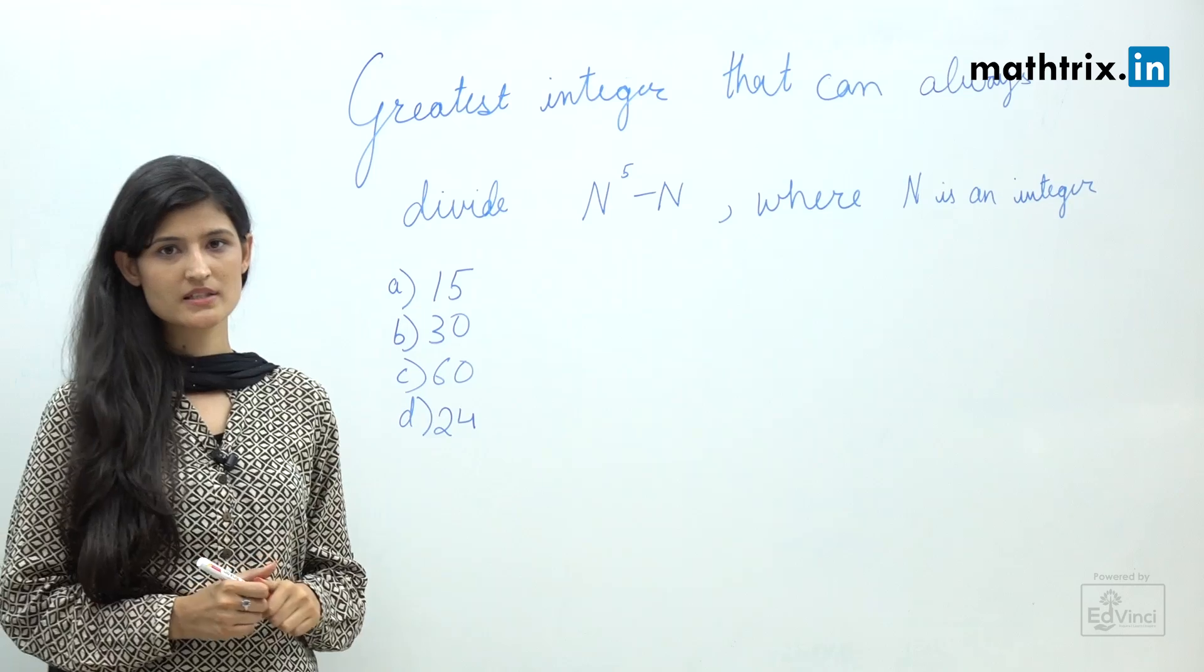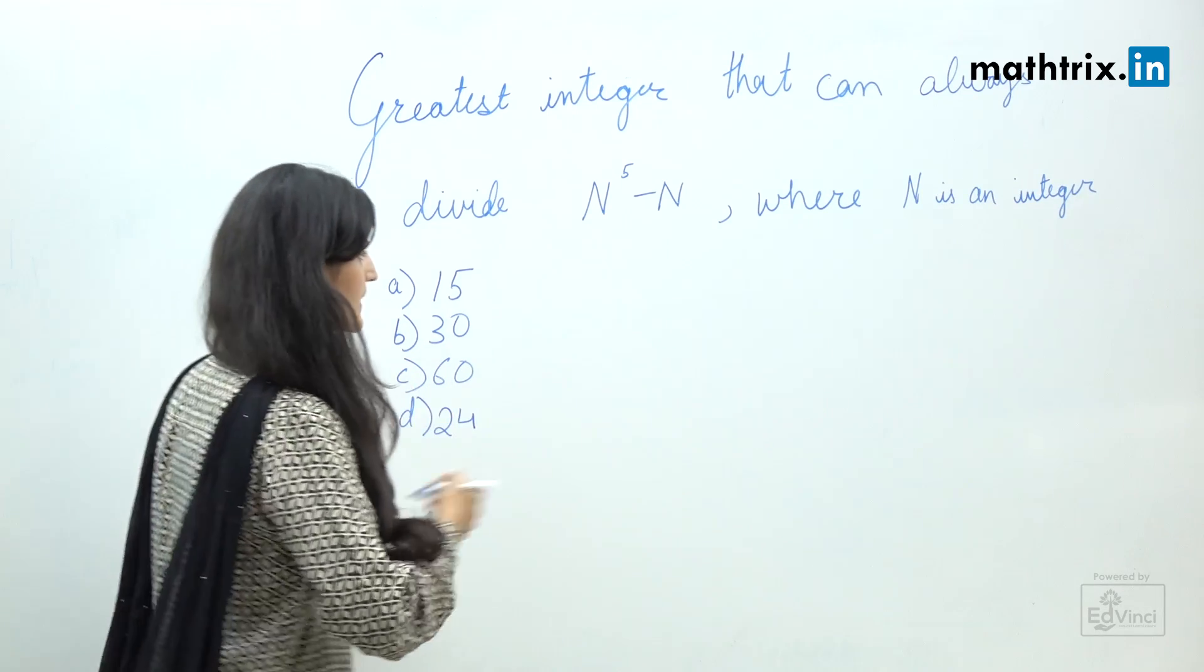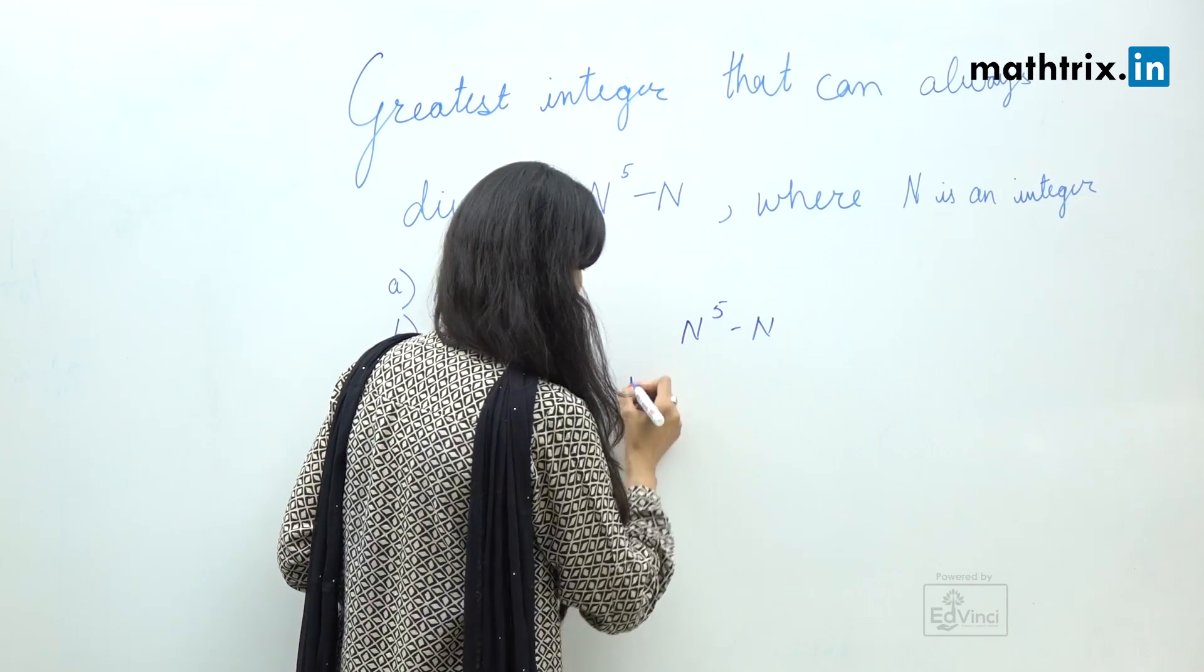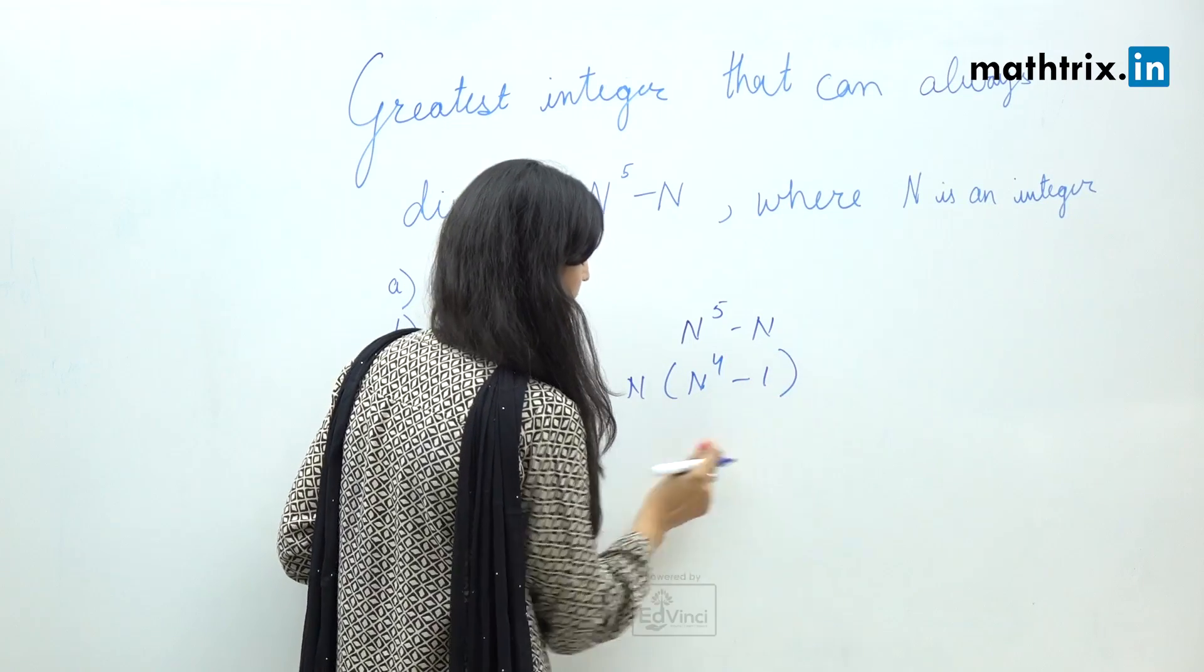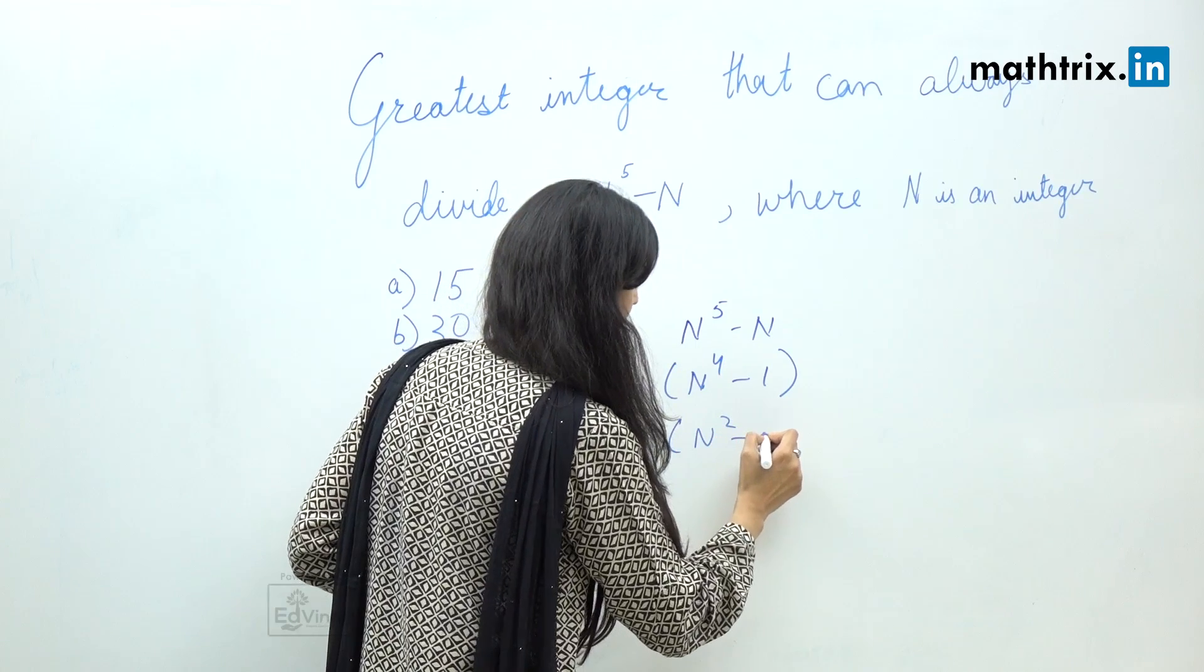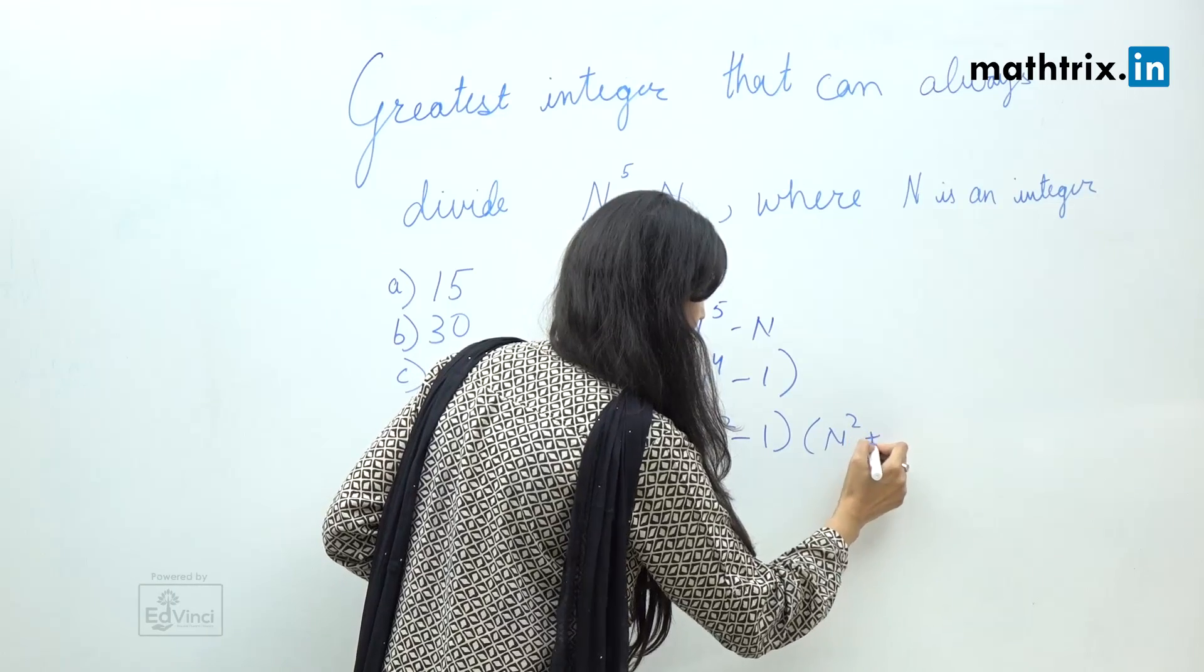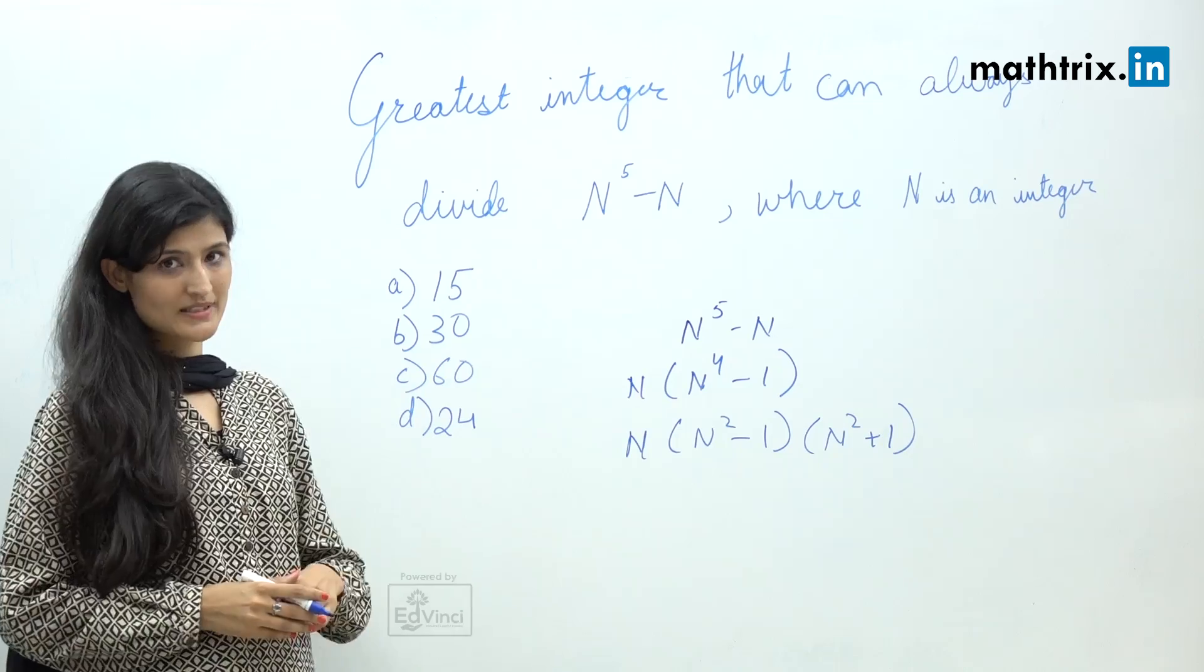For such type of question, you know students what they do generally they just start doing something like okay we know n^5 minus n, take n common, we'll take n^4 minus n which is a^2 minus b^2, then it's a minus b, a plus b and so on. But you know you don't have to do this all.